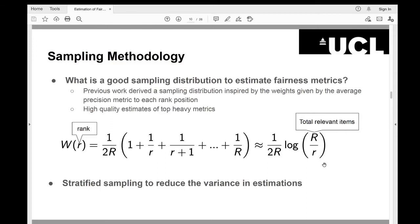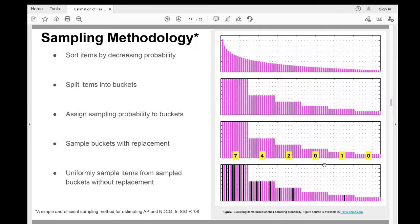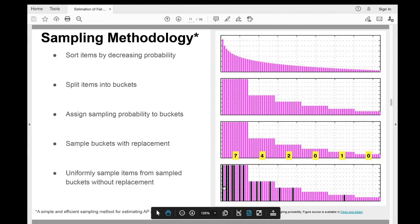After assigning sampling weight to each item in collection, we use stratified sampling to reduce the variance in estimations. And here is how stratified sampling works. We first sort items by decreasing probability, as you can see from the top row of the figure. And then we split them into buckets. The bucket size is called M, which is an annotation budget given by an application owner again. We assign sampling probabilities to each bucket that is proportional to the sampling weight of the items in this bucket. And then we sample buckets with replacement M times. And then we uniformly sample items from sampled buckets without replacement. Here the black bars represent the sampled items from each bucket.